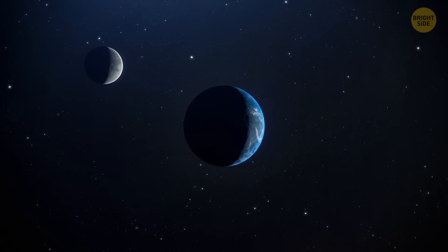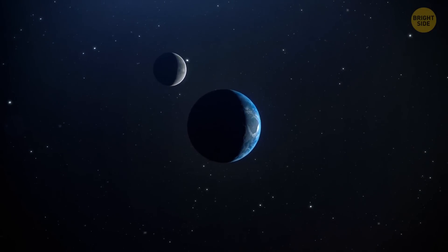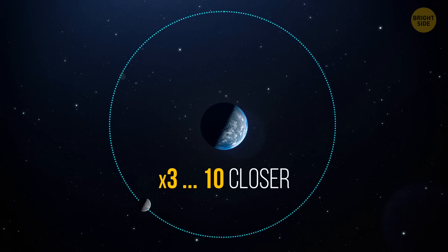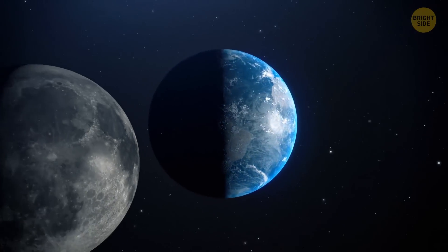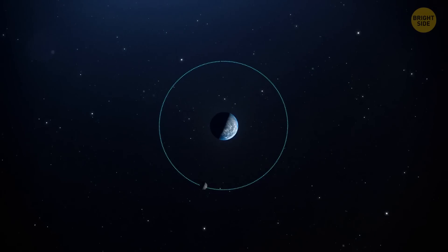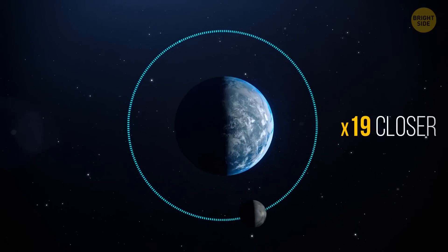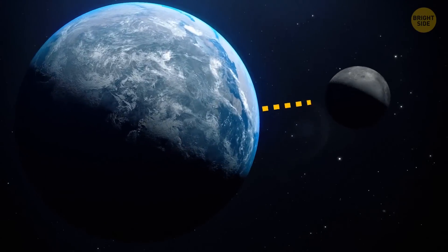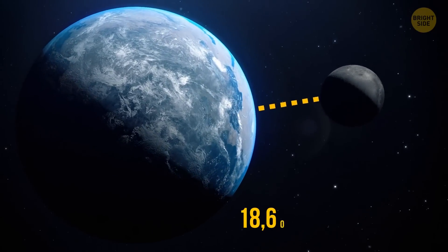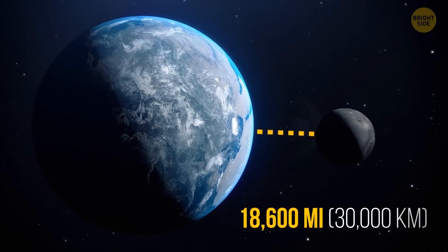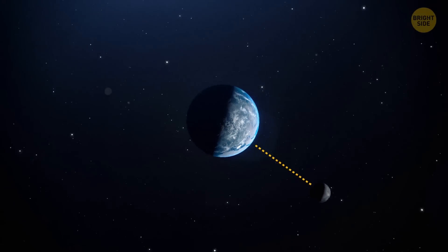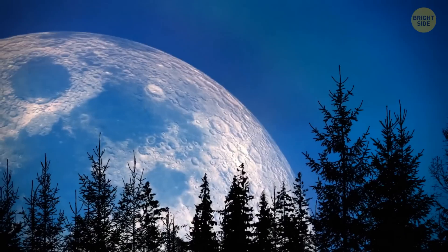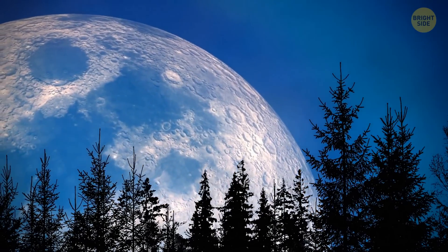When the moon did have an atmosphere, the satellite was 3 to 10 times closer to our planet. One computer simulation even suggests the moon was probably up to 19 times closer than it is now — the distance between it and our planet could have been just 18,600 miles. These days, our satellite is around 240,000 miles away, so the moon looked much, much bigger in the sky back then.